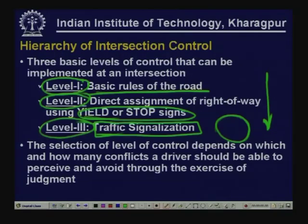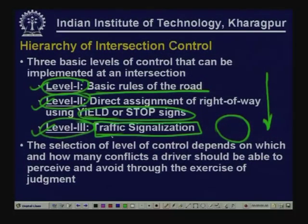Traffic signalization allows the same space to serve different movement types at different times. You may start with an isolated signal design, then coordinate signals. If even signalization cannot manage traffic adequately or ensure safety and efficiency, you must think of grade-separated intersection. Our main focus today is at-grade intersection and traffic signalization.